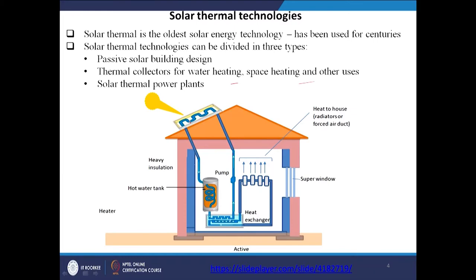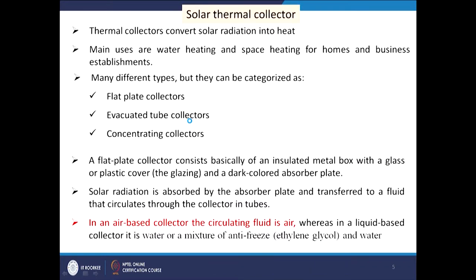Solar thermal collectors used at the rooftop may be of different types: it may be a flat plate collector, an evacuated tube collector, or a concentrating collector. There are basically three types of collectors reported. The main uses are water heating and space heating for homes and business establishments.